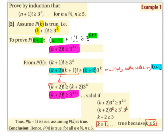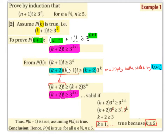From our assumption P(k): (k+1)! ≥ 3^k. We multiply both sides by (k+2), giving (k+1)! × (k+2) ≥ 3^k × (k+2). The left-hand side, (k+2) × (k+1)!, simplifies to (k+2)!, since k+2 factorial written out is (k+2)×(k+1)×k×… The right-hand side remains (k+2) × 3^k.